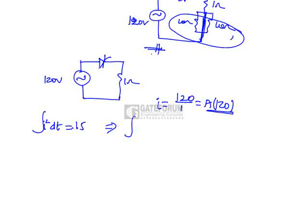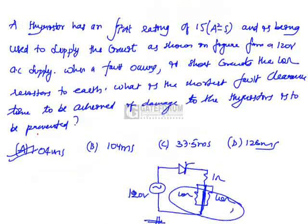So, integral of 120 square into DT equals 15. I can say this as T equals 15 by 120 whole square. So, this is 1.04 milliseconds is the correct answer. Option A. Option A is the right answer.